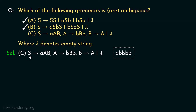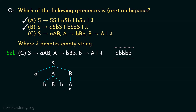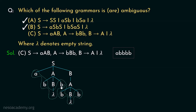The start symbol is S. From S we derive small-a, capital-A, and capital-B. We've derived our first 'a'. From capital-A we derive small-b, capital-B, small-b. From that capital-B we derive capital-A, and that A derives small-b, capital-B, small-b. Since B → lambda, from the remaining B's we derive lambdas. The yield is 'abbbb' — a followed by four b's.